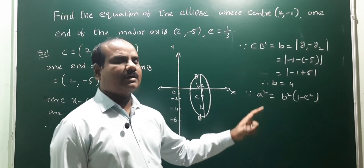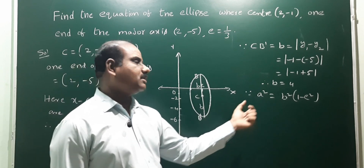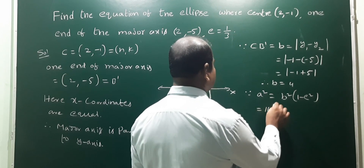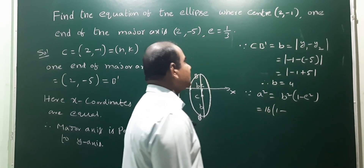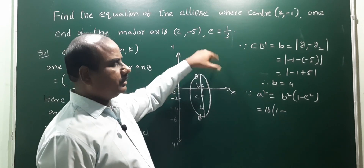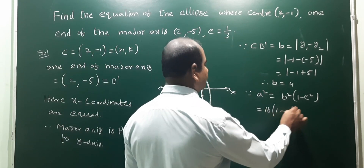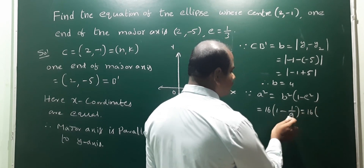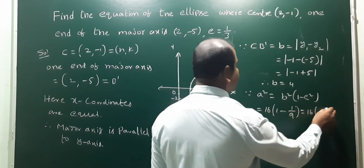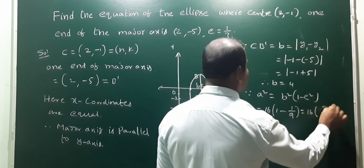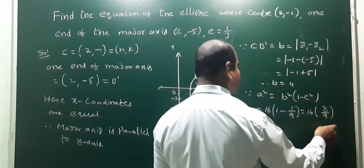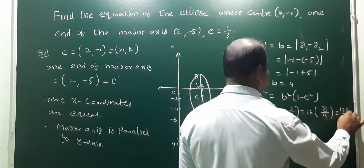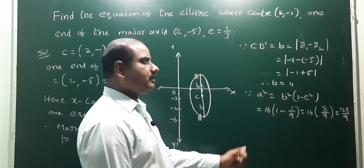Eccentricity formula: a² = b²(1 - e²). We have b² = 16 and eccentricity e = 1/3, so e² = 1/9. Therefore a² = 16 × (1 - 1/9) = 16 × (8/9) = 128/9. That is the value of a².